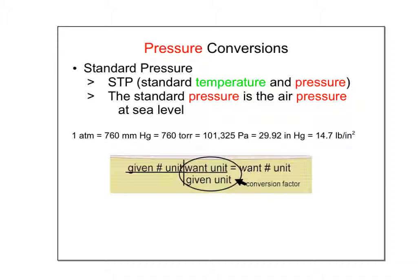Before converting pressure units, let's talk about standard pressure. STP stands for standard temperature and pressure. Standard pressure is air pressure at sea level: 1 atm, 760 mmHg, 760 torr, 101,325 pascals, 29.92 inches of mercury, and 14.7 pounds per square inch — all equal values in different units.